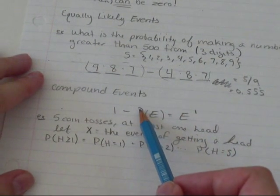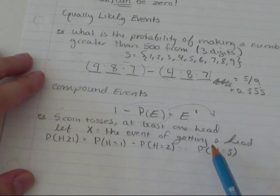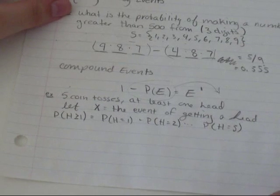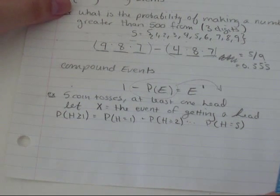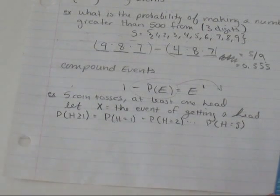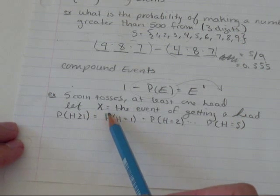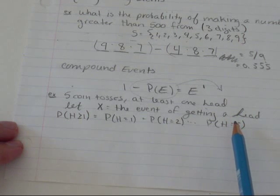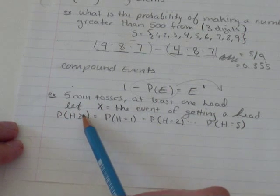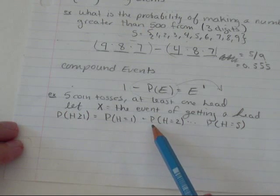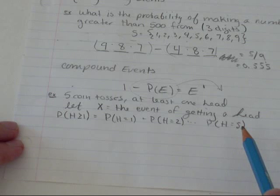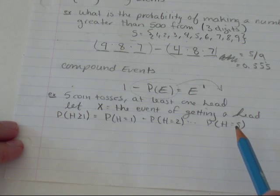And you'll notice, if I moved the probability of e over this side, I would get e prime plus the probability of e equals one. So, I've got an example here. Five coin tosses and at least one is a head. What are the odds of getting that? So, first of all, I'm going to let capital X equal the event of getting a head. So, I need at least one head. So, the probability of head being greater than or equal to one is the probability of getting one head plus the probability of getting two heads all the way up to the probability of getting five heads. Well, that's a lot of things to add up.